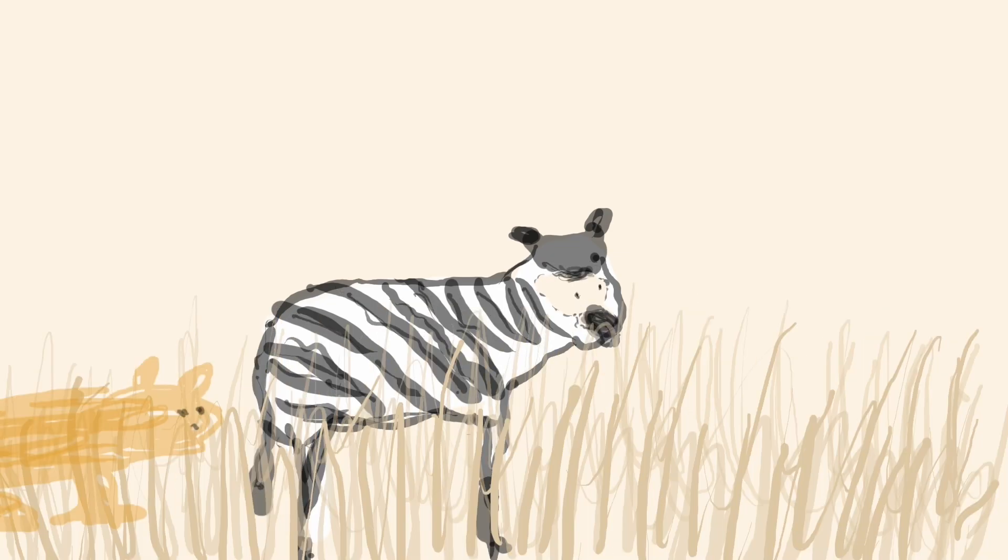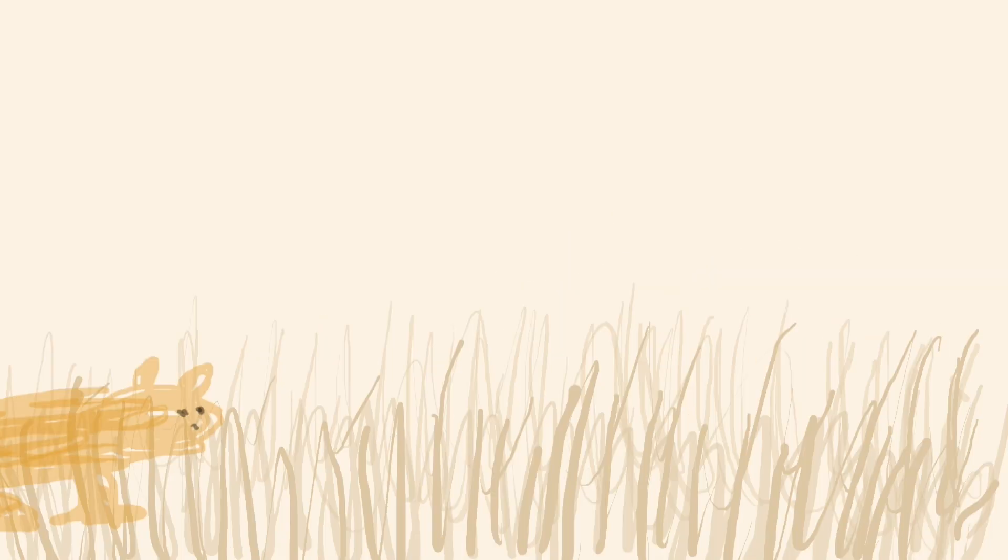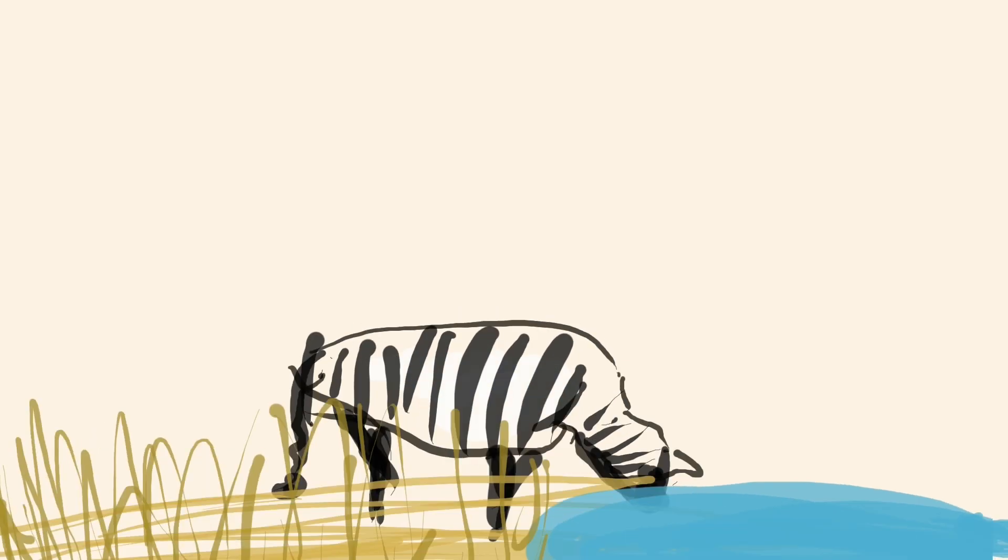The lion approaches, and in an instant the zebra is in flight, evading sharp teeth and the threat of becoming a meal. Once the danger has passed, the zebra returns to its calm grazing state. The stress of the chase, a fleeting memory.